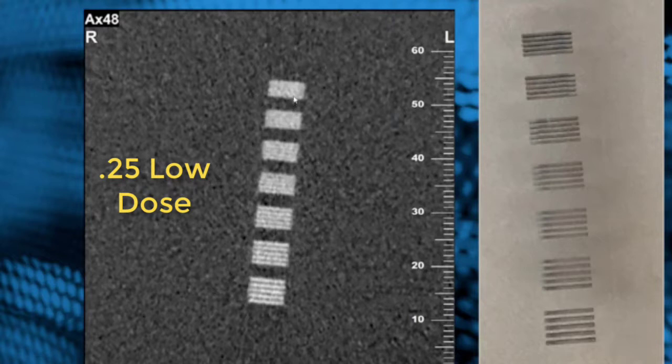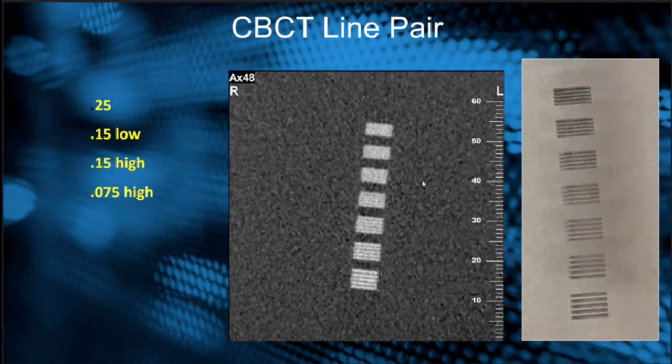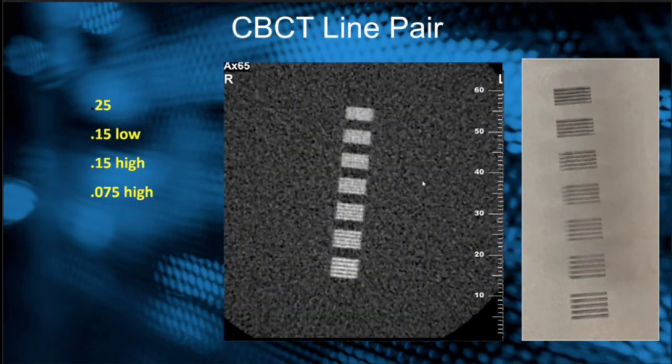Then I can do a 0.25 millimeter low resolution scan and look at the detail we can see now in the line pair. So we're understanding that a 0.25 voxel is going to give us better detail than a 0.25 voxel.